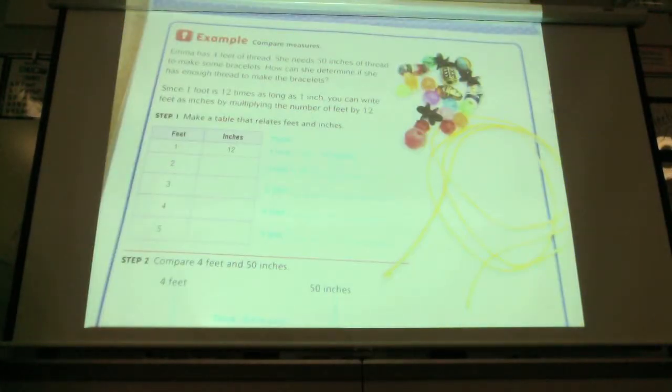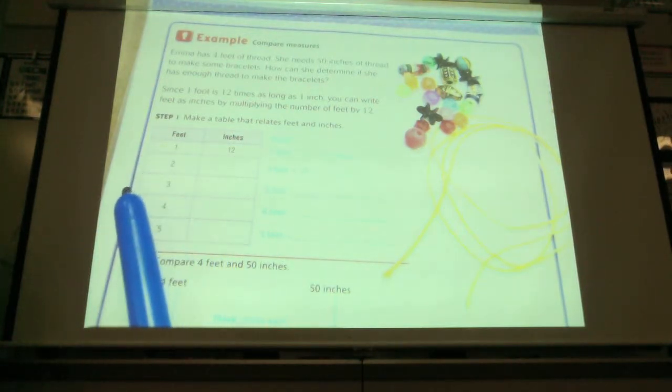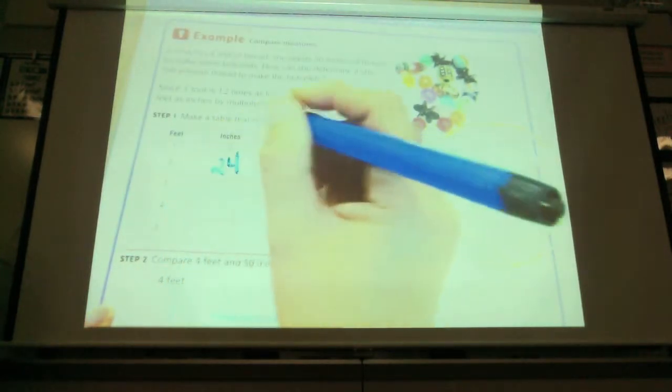Emma has four feet of thread. She needs fifty inches of thread to make some bracelets. How can she determine if she has enough thread to make the bracelets? Since one foot is twelve times as long as one inch, you can write feet as inches by multiplying the number of feet by twelve. Let's talk about what that means. If I have one foot, how many inches is that? If I had one foot, how many inches is that class? Twelve inches. Twelve inches. Now imagine I have two feet. All right, I want to hear your guesses. Twenty-four! Oh my goodness, that's a really good guess.